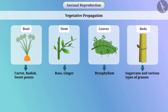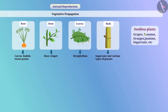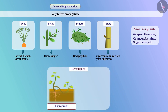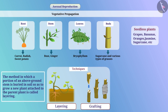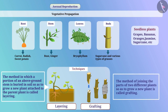Vegetative propagation can be used in agriculture for the production of grapes, bananas, oranges, jasmine, sugarcane, etc. Techniques like layering and grafting can be used. The method in which a portion of an above-ground stem is buried in the soil to grow a new plant attached to the parent plant is called layering. The method of joining parts of two different plants to grow a new plant is called grafting.